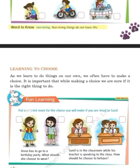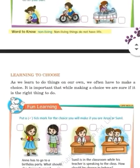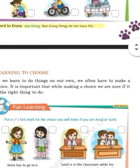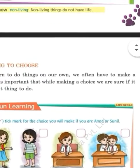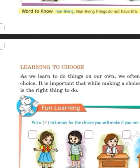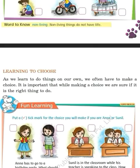The last topic is 'Learning to Choose.' As we learn to do things on our own, we often have to make a choice. It is important that while making a choice, we are sure it is the right thing to do. When we make a choice, we should be sure that what we are going to do is right.